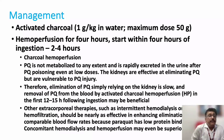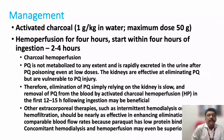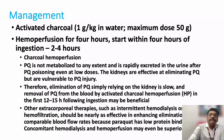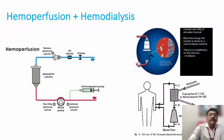Activated charcoal can be given at one gram per kg, maximum 50 grams, as soon as possible — ideally within one hour of ingestion. Charcoal hemoperfusion is another strategy: blood is circulated through a dialysis machine and passed through a charcoal-filled perfusion cartridge, adsorbing paraquat molecules from the blood and removing the poison.